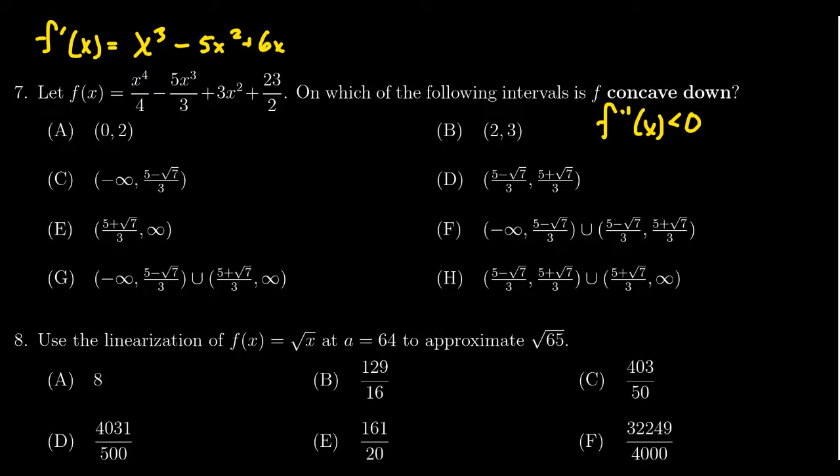Now when we calculate the second derivative, because concavity is determined by the second derivative, we do the derivative again, so we get 3x^2 - 10x + 6. Now we have this quadratic function, and we have to identify when this thing is equal to zero, so we'll have to solve this quadratic equation. We can do that by factoring, completing the square, or maybe the quadratic formula.